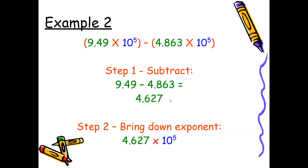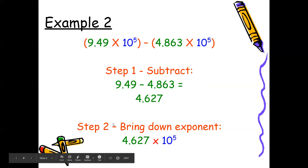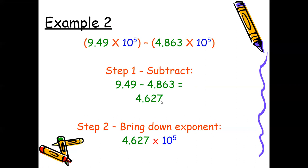Example two: we're going to subtract. First, look at the base and exponent — both are 10 to the fifth power, so I can proceed and subtract my coefficients. Make sure you align the decimals when subtracting. Once I subtract, I get 4.627. That's in scientific notation form because 4 falls between 1 and 10. Bring down the exponent: the final answer is 4.627 times 10 to the fifth power.